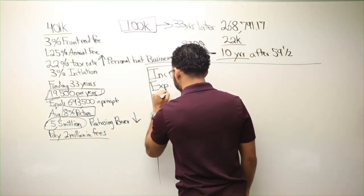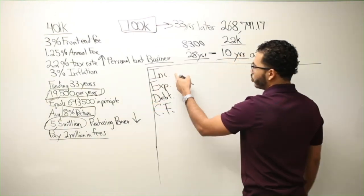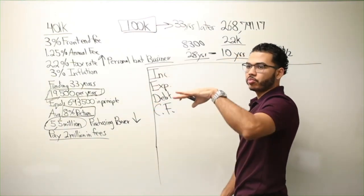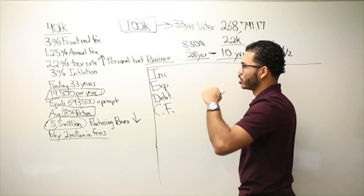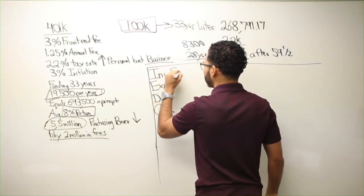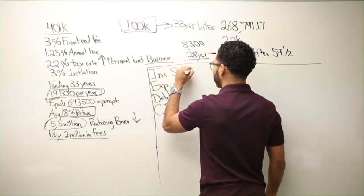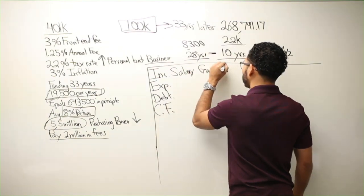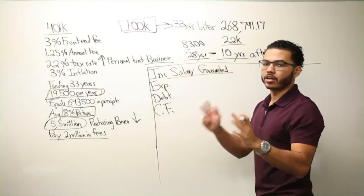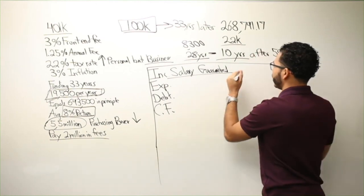expense, debt, and cash flow. With your income, since you're salary plus commission, what I do is I just go off your salary - the guaranteed money that's coming in. So what's the guaranteed income you have per year?